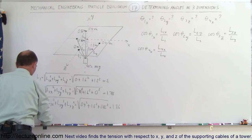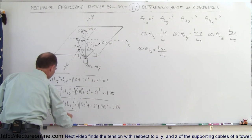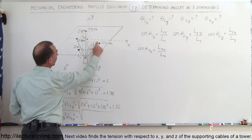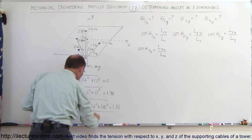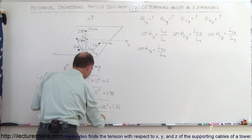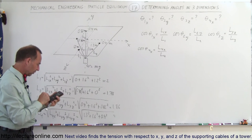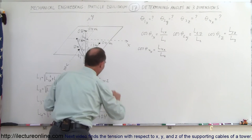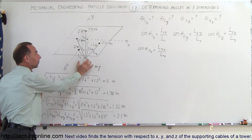Finally, L4 equals the square root of L4x squared plus L4y squared plus L4z squared. In the x-direction it's 1.3 meters to the right of the origin, so 1.3 squared. The y-direction is 1.6 squared since it's 1.6 meters below the plane, and the z-direction is 0.4 squared. So 1.3 squared plus 1.6 squared plus 0.4 squared, taking the square root, gives 2.1 meters. These are the lengths, in meters, of the four cables holding up the weight.